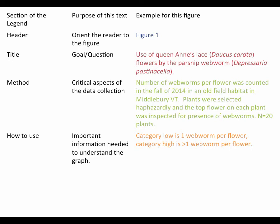The first main part of the figure is the title, and the purpose of the title is to provide the reader with an indication of the goal or the question that you're asking. For this particular project, the goal was to look at the use of Queen Anne's lace by the parsnip webworm. Note that we've been very specific — we've used the Latin genus and species name for both the flower and the insect. You want to use Latin genus and species names whenever you can because they are unambiguous.